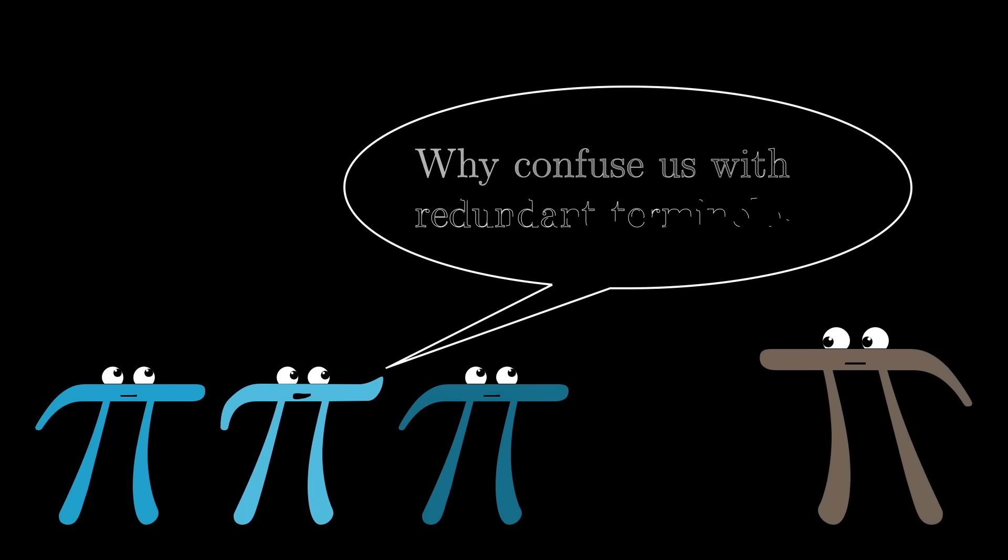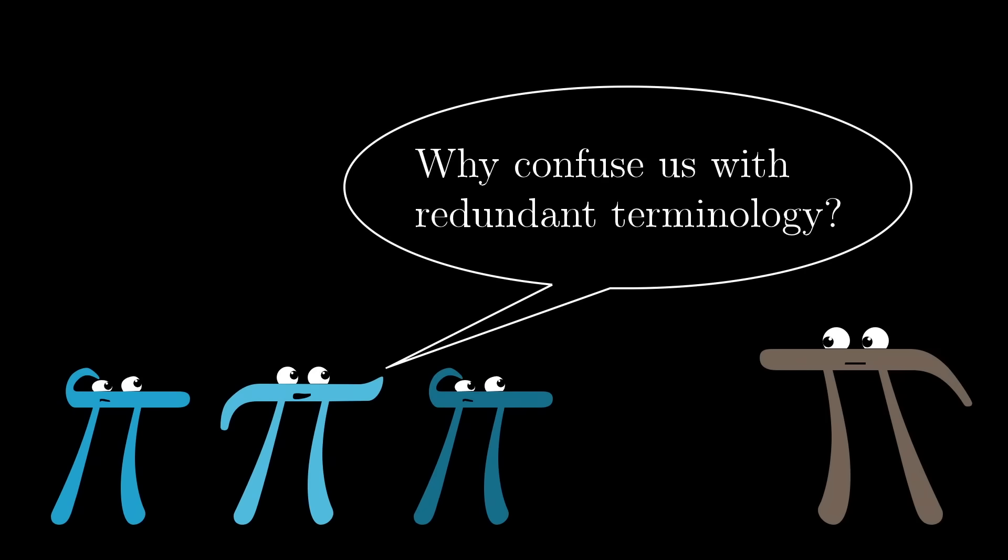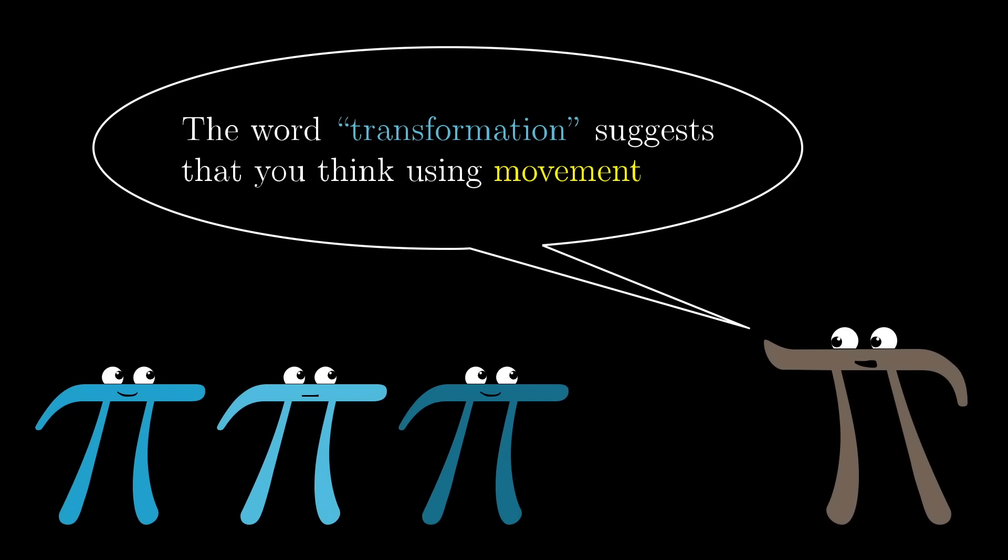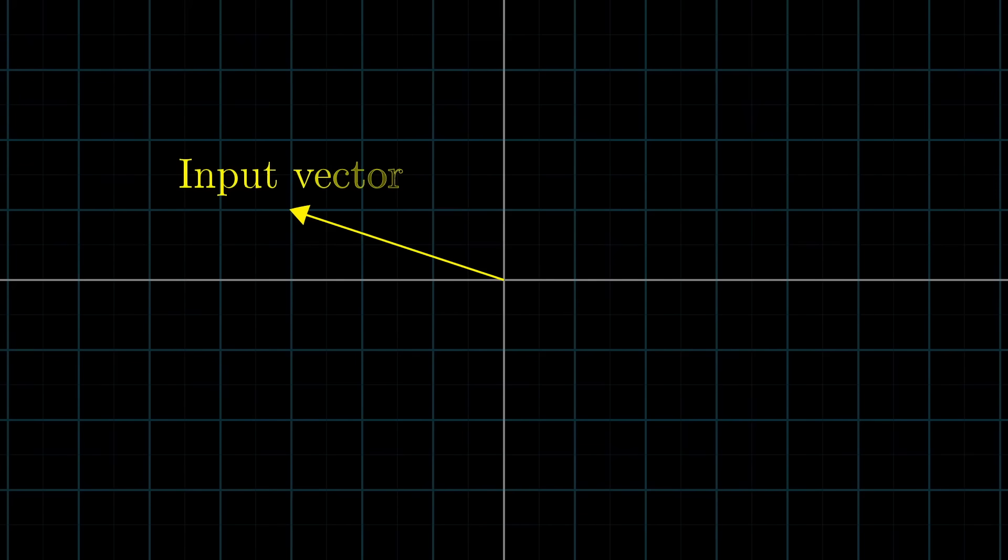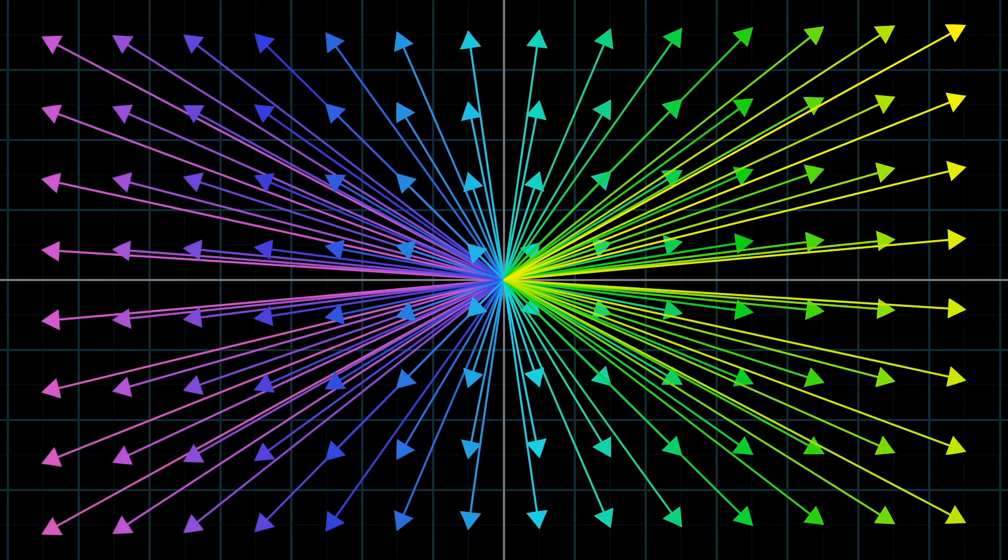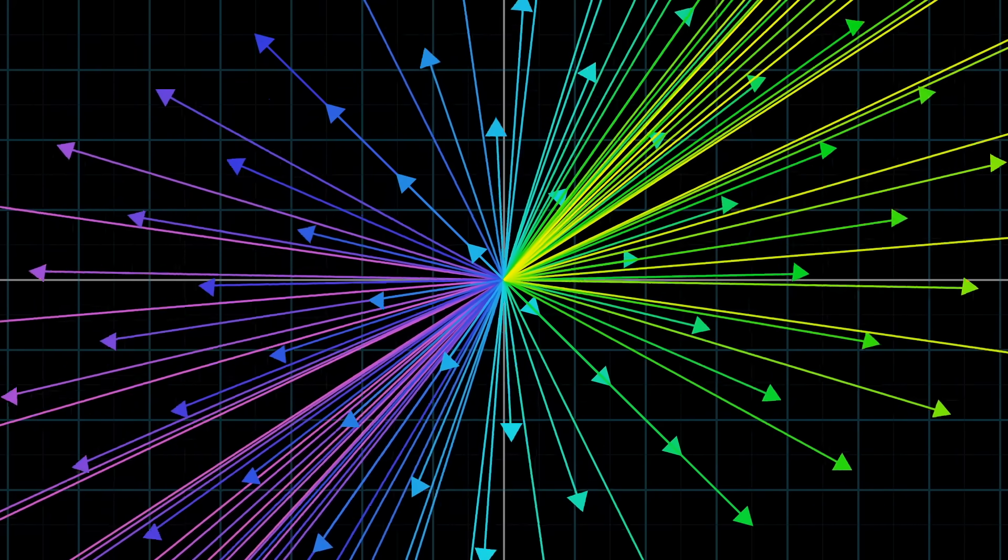So why use the word transformation instead of function if they mean the same thing? Well, it's to be suggestive of a certain way to visualize this input-output relation. You see, a great way to understand functions of vectors is to use movement. If a transformation takes some input vector to some output vector, we imagine that input vector moving over to the output vector. Then to understand the transformation as a whole, we might imagine watching every possible input vector move over to its corresponding output vector.